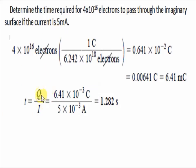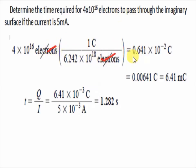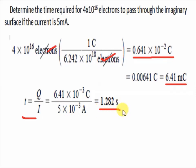The problem is, the current is given but we don't have the charge yet. So, we use the conversion that 1 coulomb = 6.242×10¹⁸ electrons. Multiply 4×10¹⁶ electrons by 1 coulomb over 6.242×10¹⁸ electrons — the electrons cancel out — giving 0.641×10⁻² coulombs, or 6.41 millicoulombs. Substituting into T = Q/I: 6.41×10⁻³ coulombs over 5×10⁻³ amperes gives an answer of 1.282 seconds.